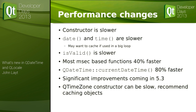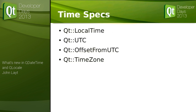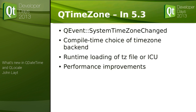One thing about QTimeZone: it can be expensive to load the time zone file and data — you want to cache it, but we leave that up to you. For time specs, you've now got four specs; read the documentation. Please try to stick to using UTC for anything important, because we've still got bugs in the local time implementation that are only going to be fixed in 5.3. In 5.3 we'll also allow you to choose your own time zone backend, so on Windows if you need reliable time zone information you'll be able to load the tz file.